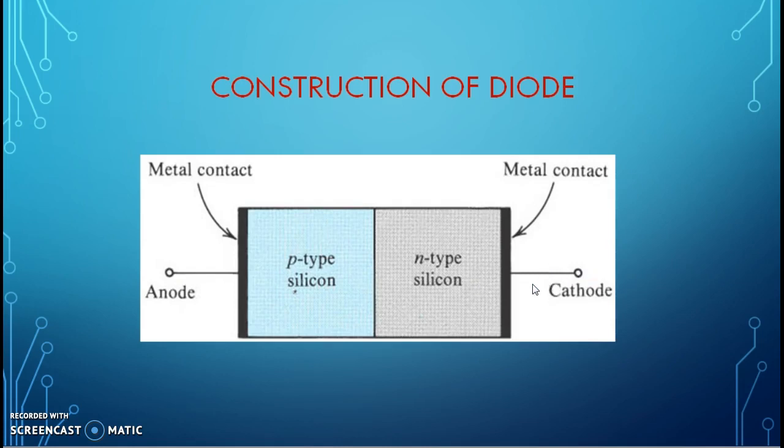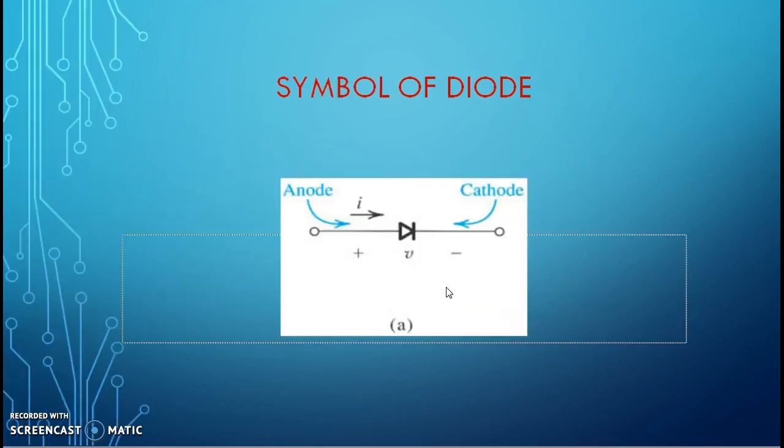We can use silicon or germanium for P-N junction diode, but generally in the applications we prefer silicon as its cut-in voltage is 0.7 volt. This is a symbol of the P-N junction diode, arrowhead with the plate. This direction of the arrowhead indicates the current direction, that is from anode to cathode.